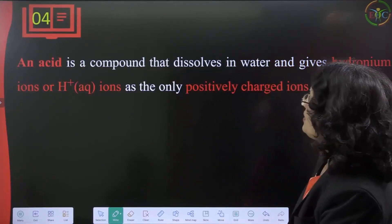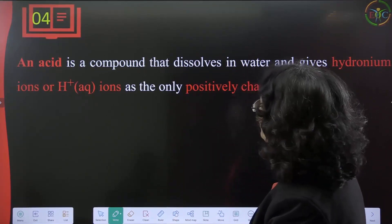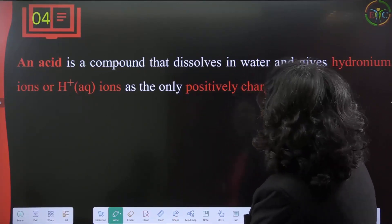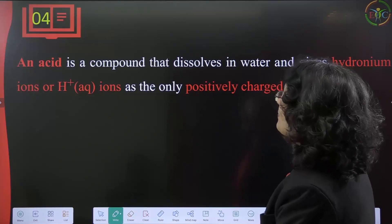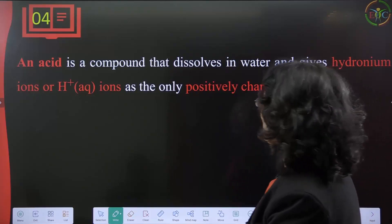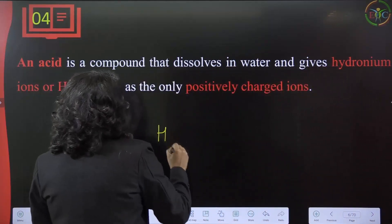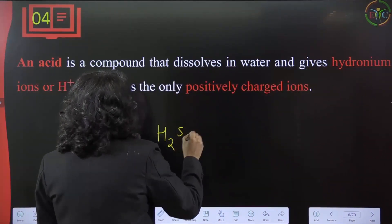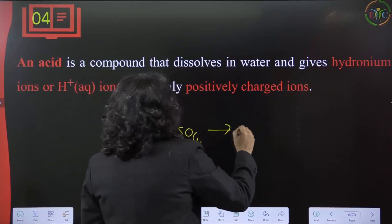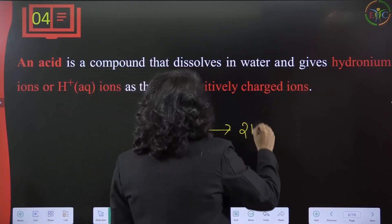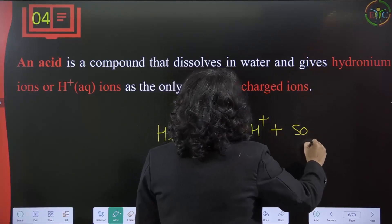An acid is a compound that dissolves in water to give hydronium ions as the only positively charged ions. For example, H₂SO₄ breaks into 2H⁺ and SO₄²⁻ — these H⁺ ions are the hydronium ions we discuss.